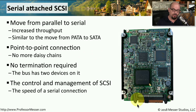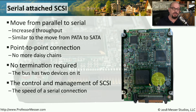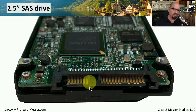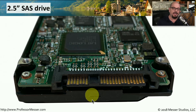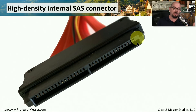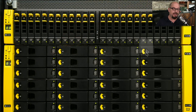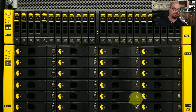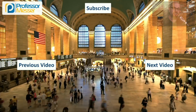The drive itself looks very similar to a traditional SATA drive, but the connectors, although very similar, do have differences between them. You can use a different type of Serial Attached SCSI cable to connect to this type of drive, and there are many different kinds of Serial Attached SCSI connections. Here's one for an internal high-density connection for SAS drives. In your enterprise, you're probably using Serial Attached SCSI drives in something like a drive array — 24 drives on the lower part and 24 drives across the top, all connecting internally with Serial Attached SCSI.